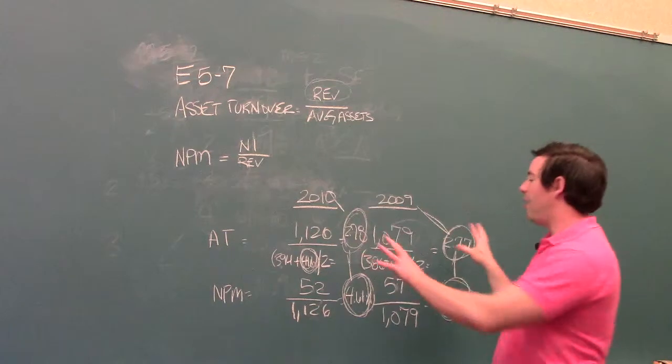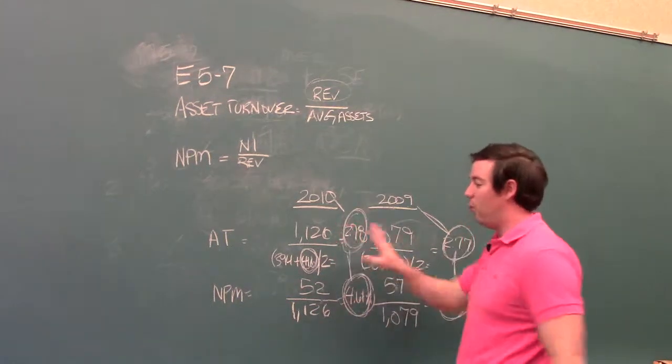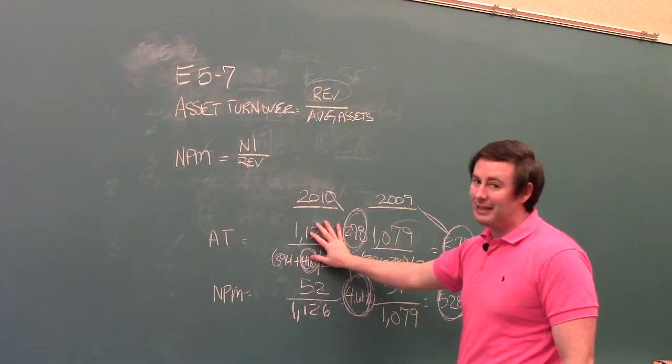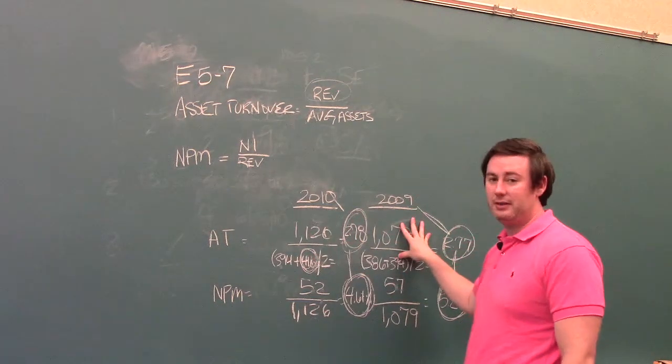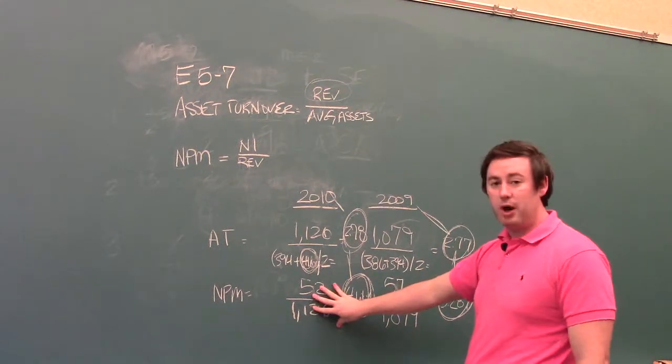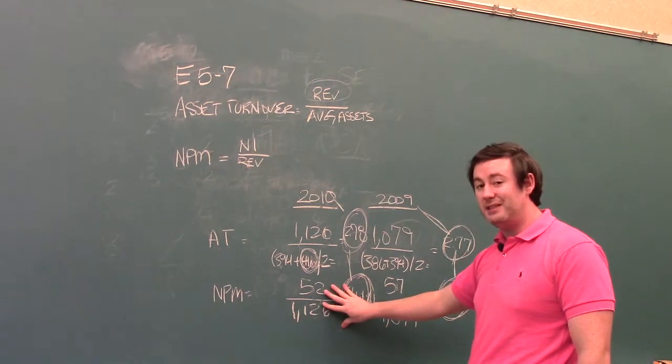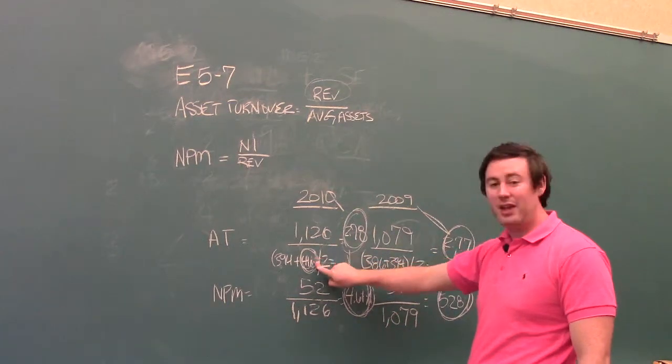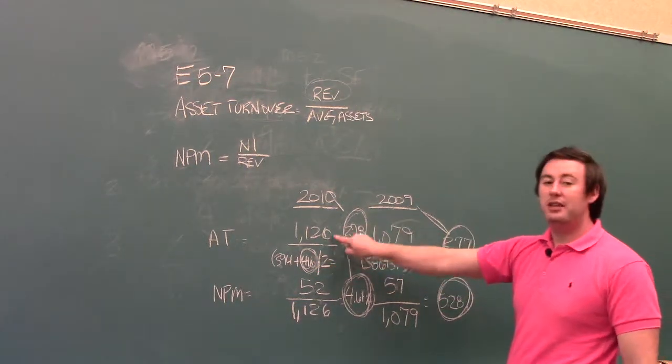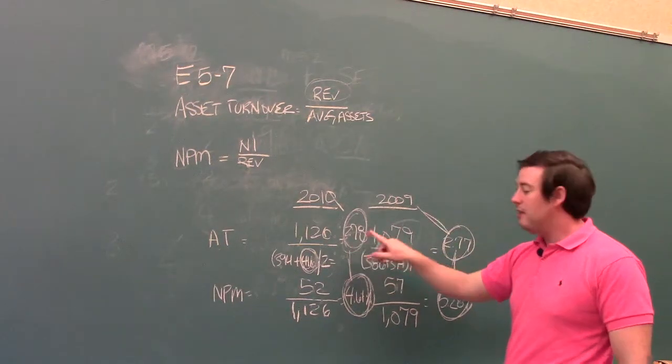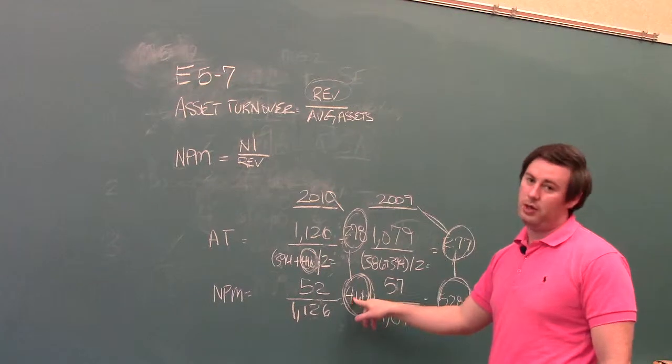So, most likely, analysts would say there's only a modest increase in the way that we're using our assets to generate revenue. We're only doing slightly better than what we did in 2009. However, we have a large decrease in our net profit margin, which means we're not controlling our expenses as well. And even though some of those expenses are due to the assets that we've increased, we're not using them efficiently enough in comparison to 2009 to 2010 to justify the decrease that we show here.